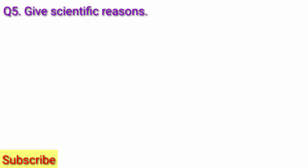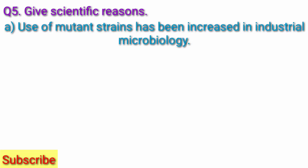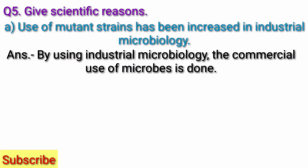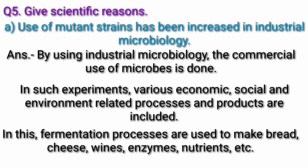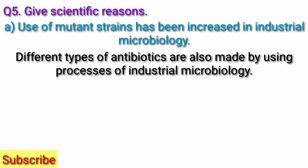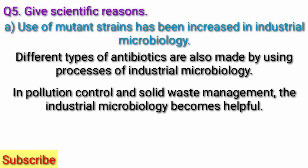Question 5. Give scientific reasons. A. Use of mutant strains has been increased in industrial microbiology. Answer: By using industrial microbiology, the commercial use of microbes is done. Various economic, social and environment-related processes and products are included. Fermentation processes are used to make bread, cheese, wines, enzymes, nutrients, etc. Different types of antibiotics are also made using industrial microbiology. In pollution control and solid waste management, industrial microbiology becomes helpful.